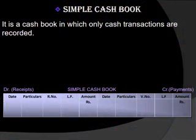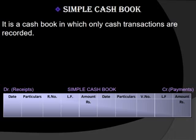The first is the simple column or single column cash book. This is the cash book in which we record only cash transactions. The format of this kind of cash book is in front of you on your screen.